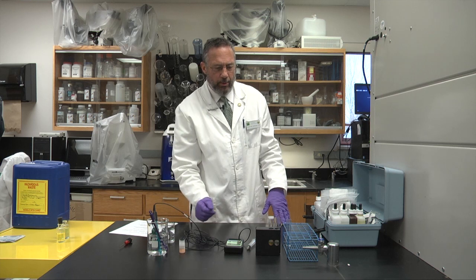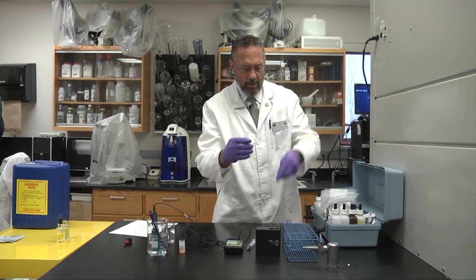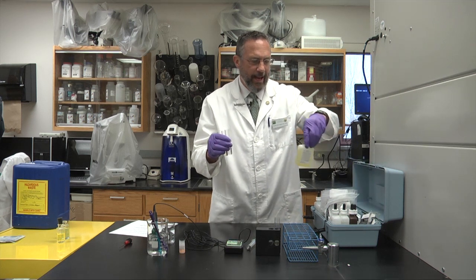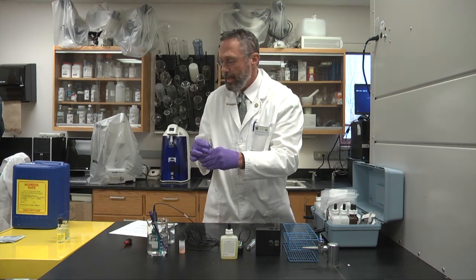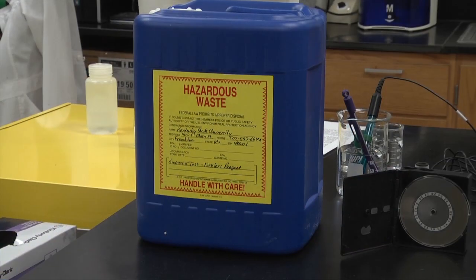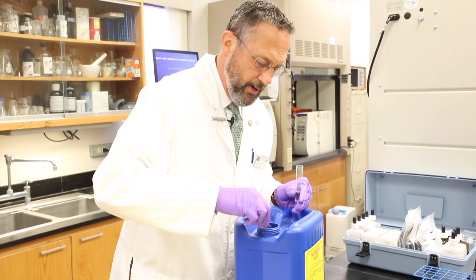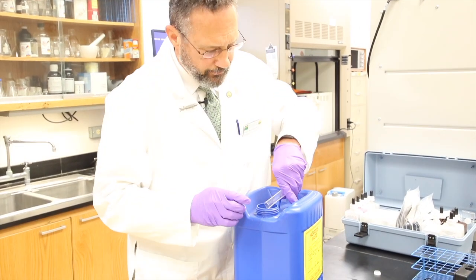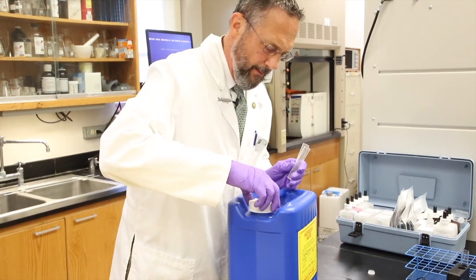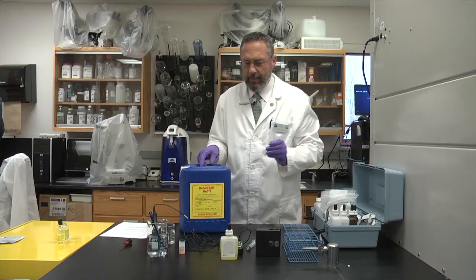When we're through with these tests here, this is especially important when we're dealing with Nessler reagent. Nessler reagent, which we used in this test, has mercury in it. And this waste container here is specifically designed to hold mercury waste from the Nessler reagent. And these are very important procedures to do because we don't want to contaminate our water supply. Or aquifers in the state might get contaminated if we simply dump these down the sink.